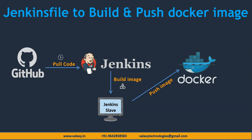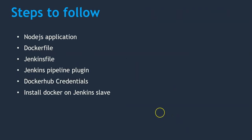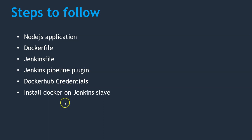Let's jump back to our discussion. These are the steps we need to follow: first we need a Node.js application already available in my GitHub repository. We need to create a Dockerfile — I have already created it. Then we need a Jenkinsfile — I have created it and will go through it. We need to install the Jenkins pipeline plugin on our Jenkins master node. After that we are committing to Docker Hub, so we need to create Docker Hub credentials and a secure token.